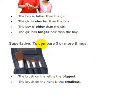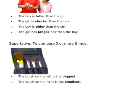Superlative is used to compare three or more things. The brush on the left is the biggest. The brush on the right is the smallest. This is the biggest, and because of that, the other brush is the smallest.